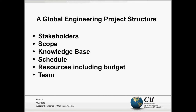A global engineering project structure is supported by six segments: the stakeholders, scope of the project, knowledge base, schedule, resources including the budget, and most importantly, the team. As project managers, we have to manage all six segments of a project. Today I will go through several cases, give a brief description of each case, and go over solutions that I implemented and explain the lessons learned from each case.